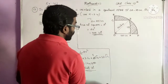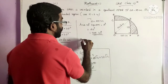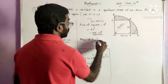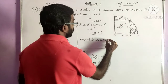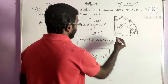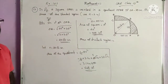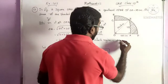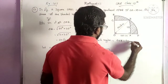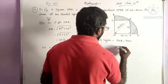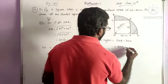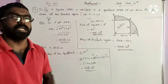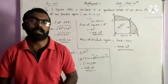Next, find the area of the square. Area of square equals A square, and the side is 20, so 20 square equals 400 cm square. Area of shaded region equals area of quadrant minus area of square, that is 628 minus 400, giving a final answer of 228 cm square.